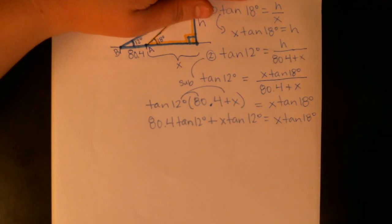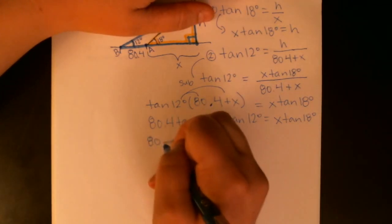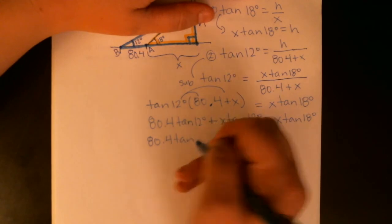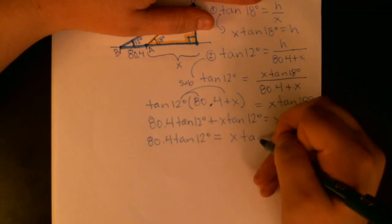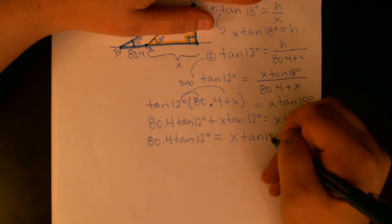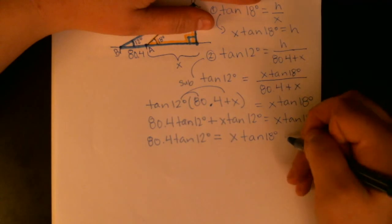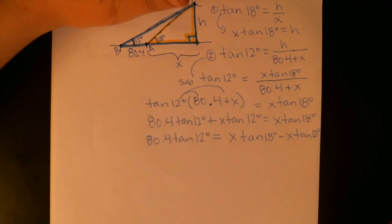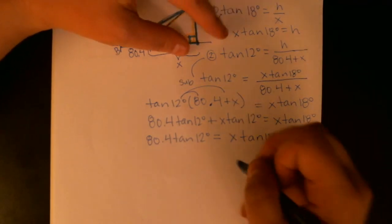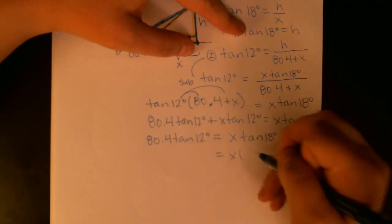Okay, we're actually pretty close. x is no longer stuck in fractions or parentheses. I can move it around as I please. I'm going to go ahead and do that by moving them both to the same side. So I'll leave the 80.4 tangent 12 degrees where it is, but I am going to subtract tangent 12 degrees times x from both sides, which will give me on the right x tangent 18 degrees minus x tangent 12 degrees. Okay, so this is getting pretty good. I've got my x's on one side. My problem right now is that there are still two x's in this equation. So I'm going to go ahead and factor x out.